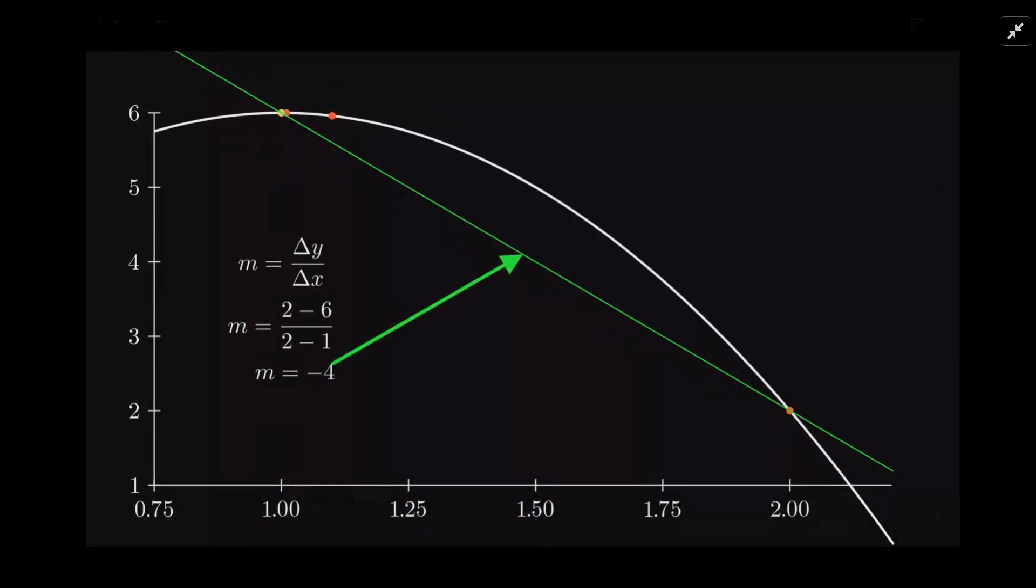Here's the next one at 1.1. Again, you'll just calculate that value from the function in the numerator - the denominator is the change in x.